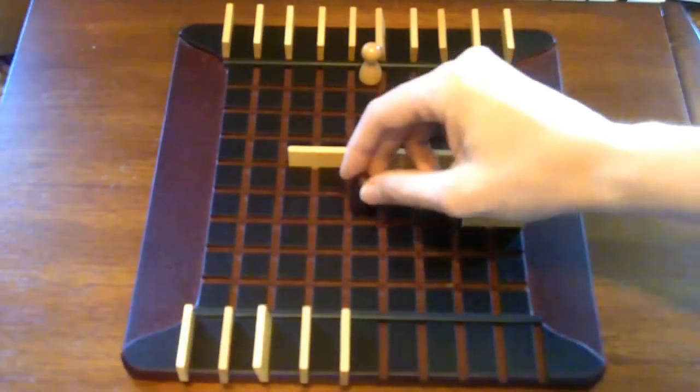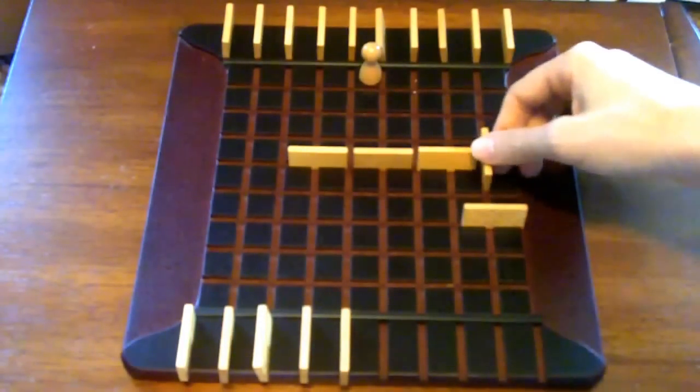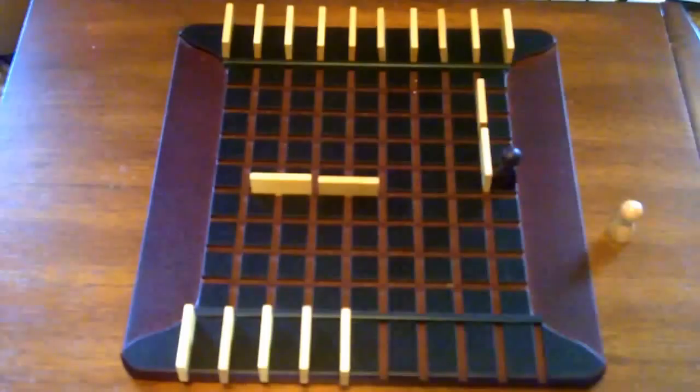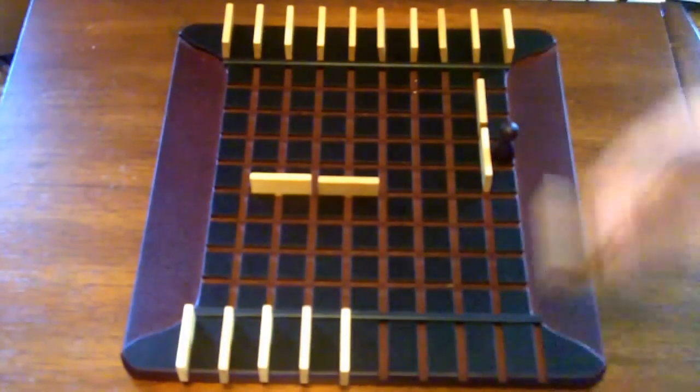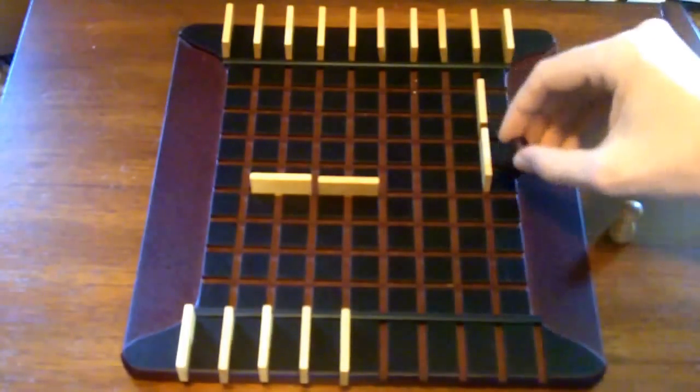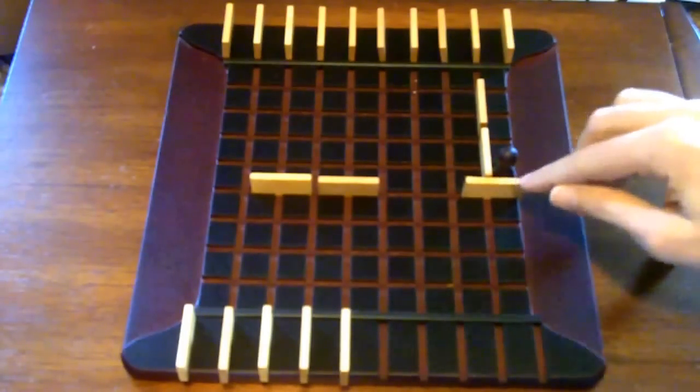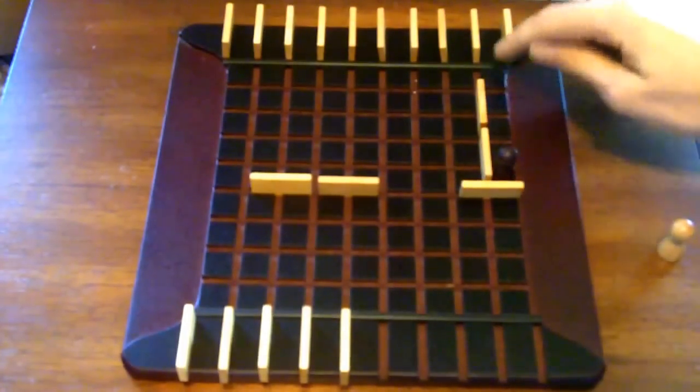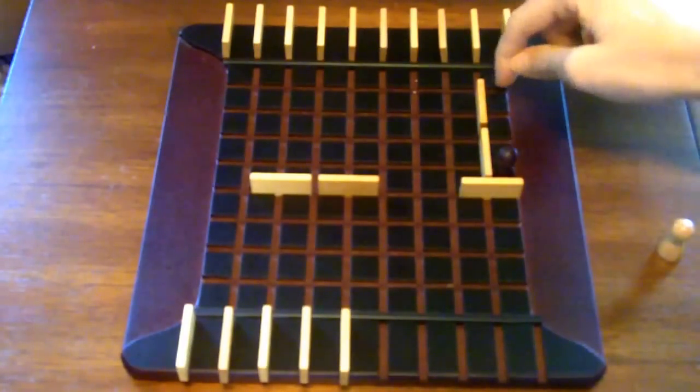But you also get to use walls to make sure that you have a path. You can use them offensively and defensively. For instance, if this is the setup, rather than just moving forward and eventually having my opponent block me off and force me back around, I stay where I'm at and I place a wall behind me. That means there's only one path to victory for me, so my opponent can't place any blocking walls.